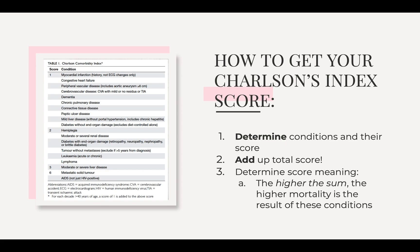On your left is an example of the Charlson comorbidity index. As you can see, there are scores which go from one to six. To get your Charlson's index score, you determine the conditions someone may have — for example, for someone around age 50, they might have blood pressure disease or chronic pulmonary disease — and you add up the different numbers to get the total score. The higher the sum, the higher the mortality as a result of those conditions.